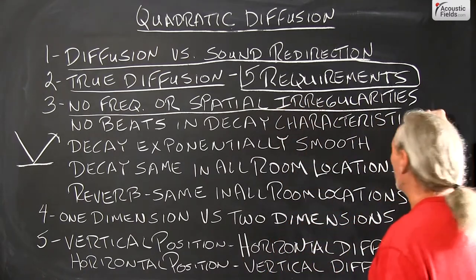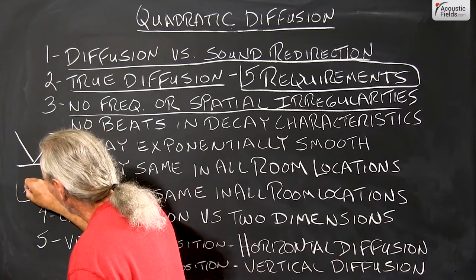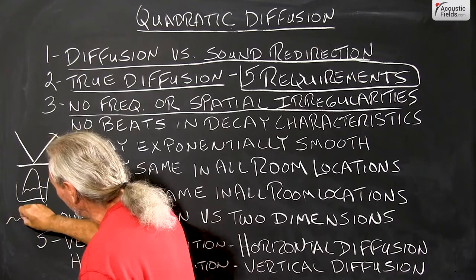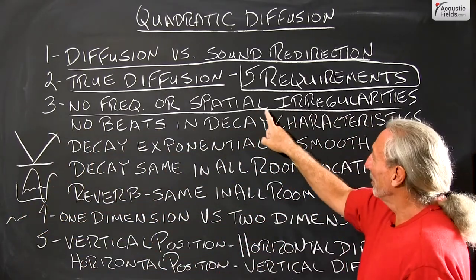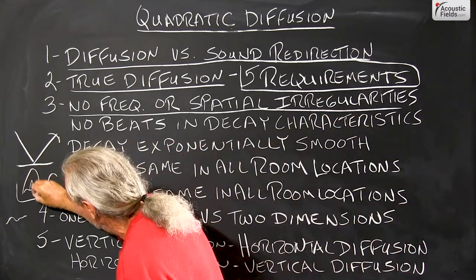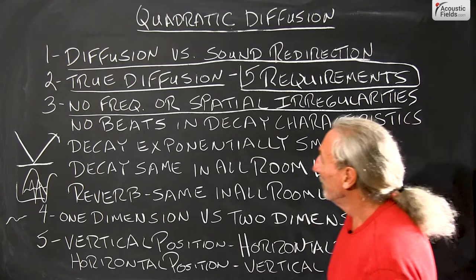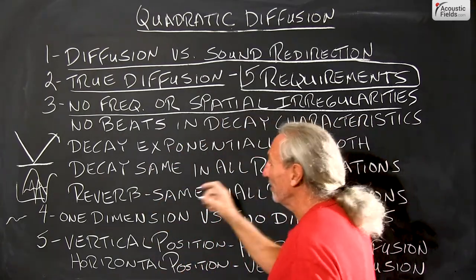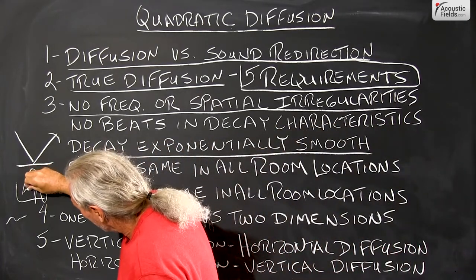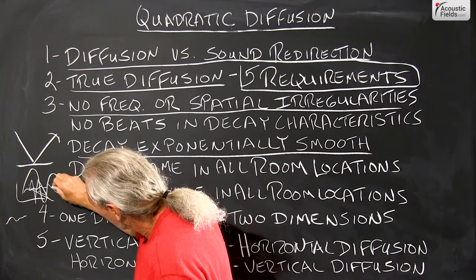First, no frequency or spatial irregularities in our response curve. So we want nice smooth response. We don't want this, we want this. We want nice smooth returns. That all can be measured. So we want no beats in the decay characteristics and we want the decay to be exponentially smooth. Meaning if we have a little bit of rise here and a fall here, then our decay over time has to be smooth.